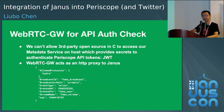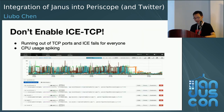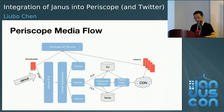Question: I saw you use RTMP from the broadcaster and HLS for delivery — why RTMP and why HLS? Answer: This is the original architecture for Periscope's backend service for the ingestion side, before Janus was introduced.